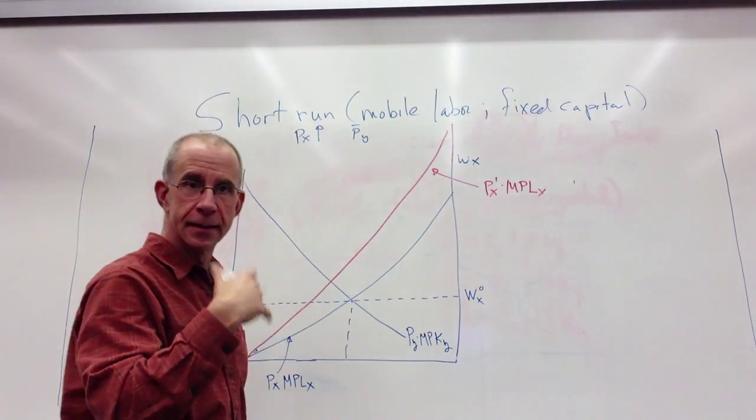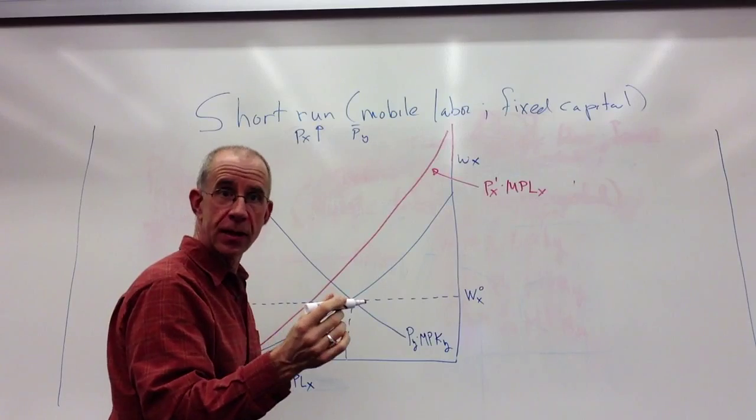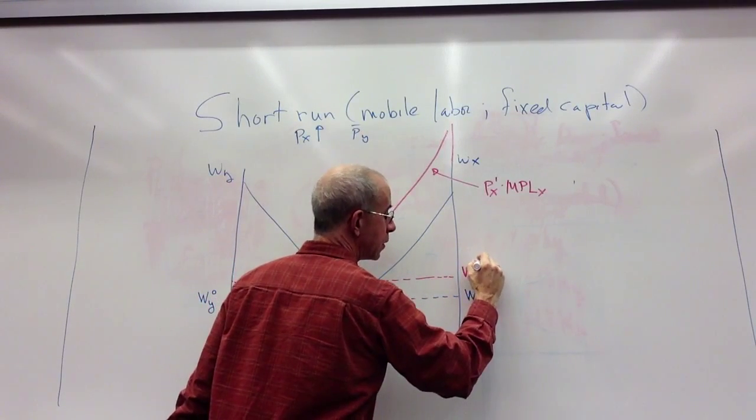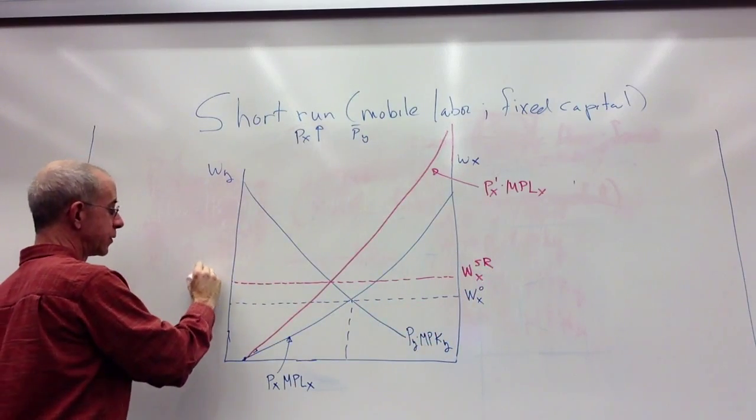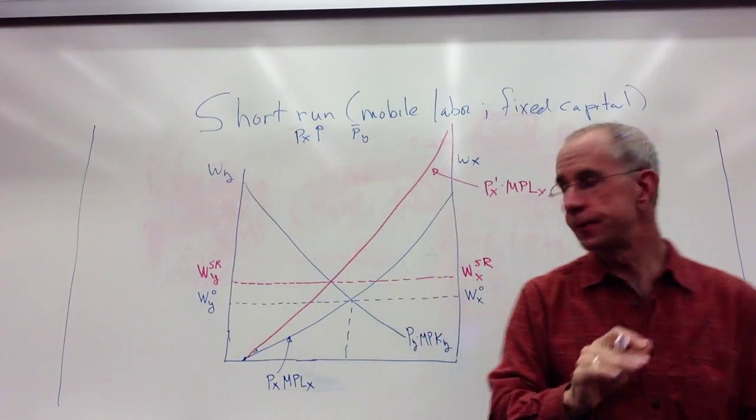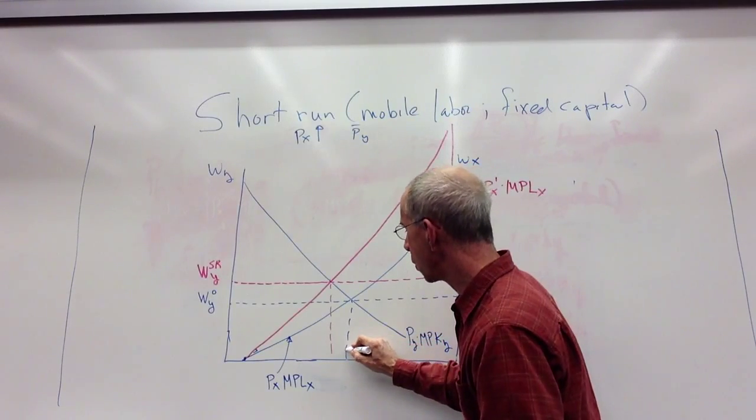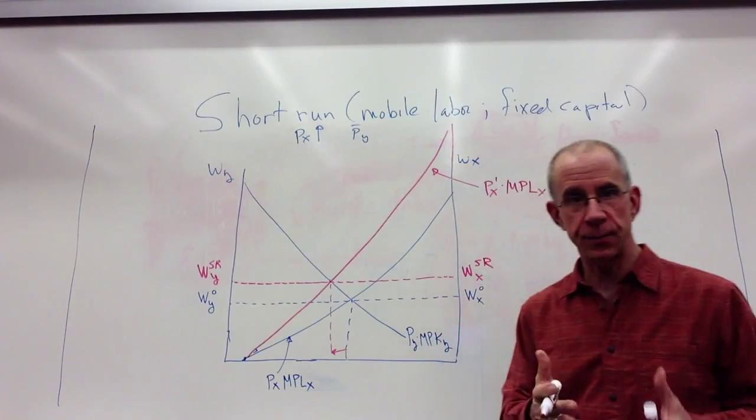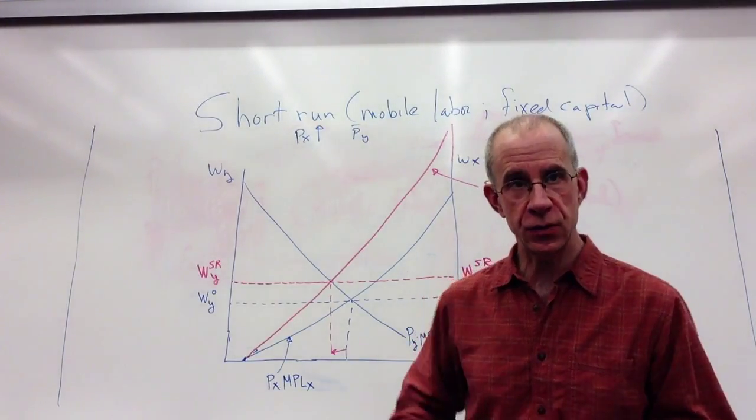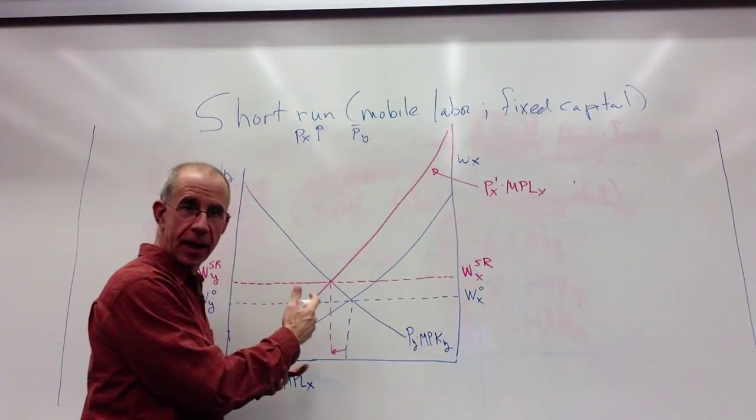What we're looking for in the short-run equilibrium is where the wage in the two sectors now equal each other. So the wage in the short-run in X is equal to the wage in the short-run in Y. So the wage goes up, and workers are going to move into the X sector because the wage went up, the demand for labor went up in the X sector. That's drawing workers from Y into X. So let's look at how the wage in X rises or the wage rises relative to the price rise.